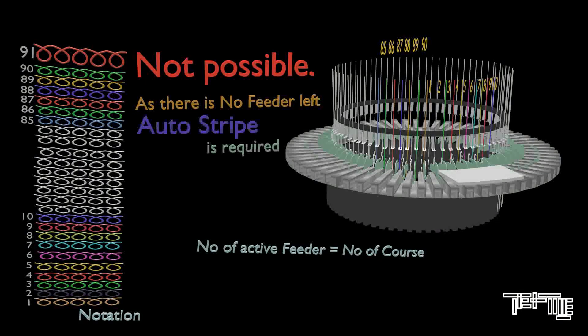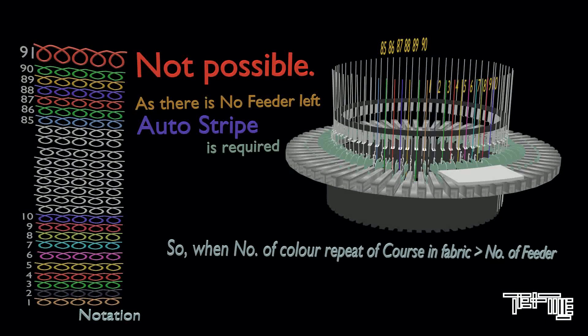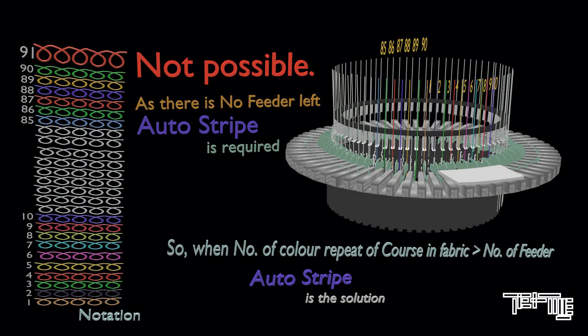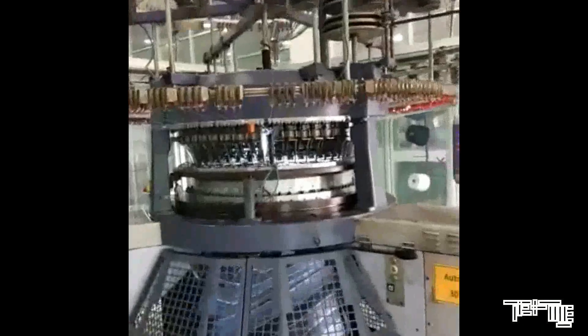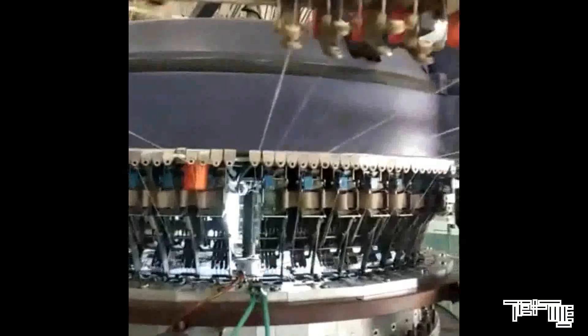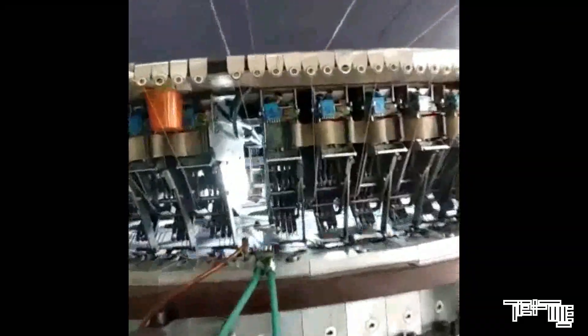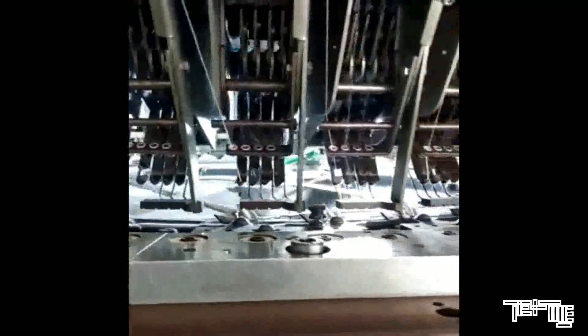The best solution is an auto stripe machine, which can produce stripe patterns more than 1.9 inches or 5 centimeters that repeatedly appear in the garment. The video shows an auto stripe machine where each feeder has four fingers. In an auto stripe machine, each feeder has a number of fingers; each finger contains a separate colored yarn and can be selected whenever needed. In every rotation, these fingers can be selected one by one to feed separate yarn to the needle.